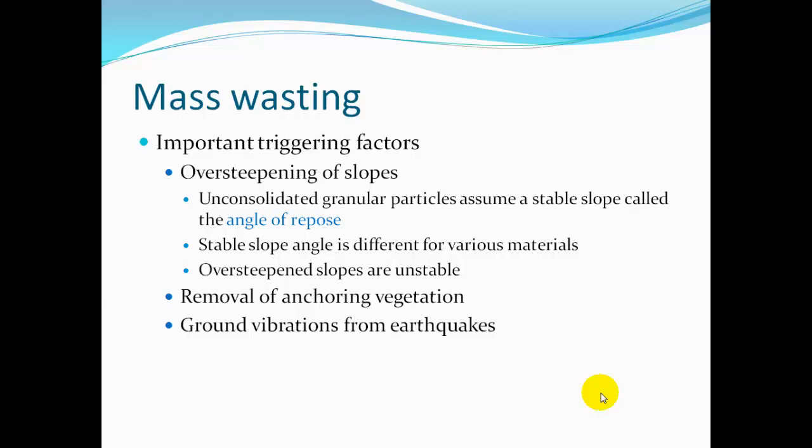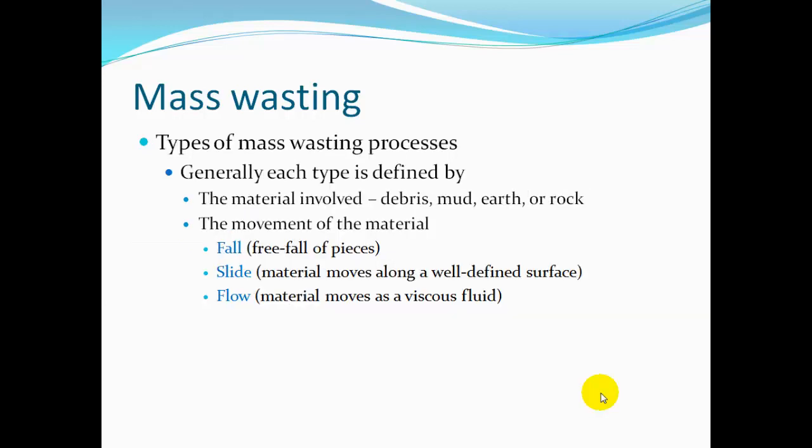Removal of anchoring vegetation — deforestation — removes trees from slopes, allowing soil to be washed away through erosion and mass wasting. Ground vibrations from earthquakes shake up the soils, and especially if there's moisture present in a clay-rich material, the soil may almost liquefy and start flowing downslope.